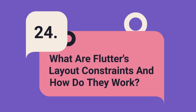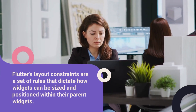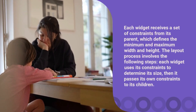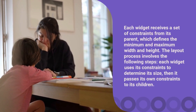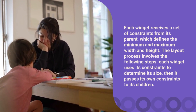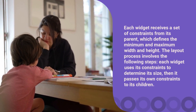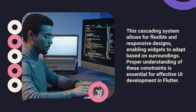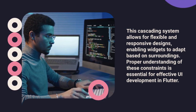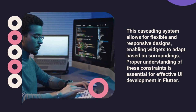Question 24: What are Flutter's layout constraints and how do they work? Flutter's layout constraints are a set of rules that dictate how widgets can be sized and positioned within their parent widgets. Each widget receives a set of constraints from its parent, which defines the minimum and maximum width and height. The layout process involves each widget using its constraints to determine its size, then passing its own constraints to its children. This cascading system allows for flexible and responsive designs, enabling widgets to adapt based on their surroundings. Proper understanding of these constraints is essential for effective UI development in Flutter.